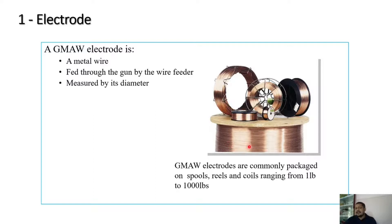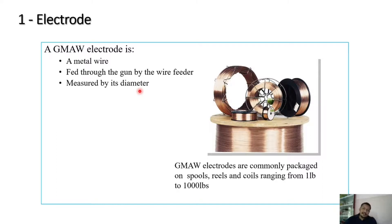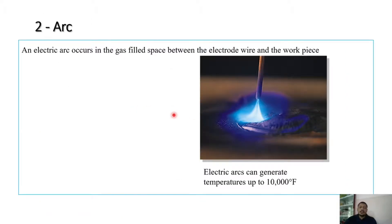GMAW electrodes come as spools or reels ranging from 1 lb to 1000 lbs. The electrode is a metal wire fed through the gun by the wire feeder, and is measured by its diameter. There is also a stated shelf life for each wire reel — beyond that, the wire may bend or break inside the guiding mechanism.